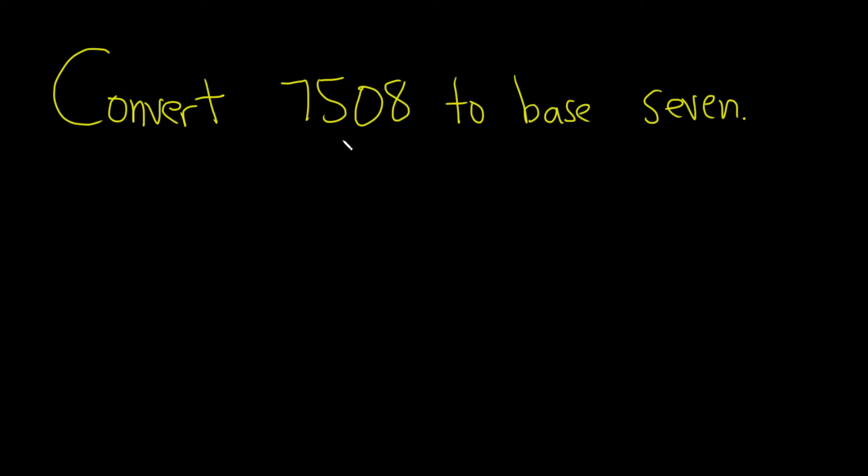In this problem, we're going to convert this number, which is in base 10, also known as decimal form, to base 7. To do this, we're going to repeatedly divide by 7 and write down the remainders.